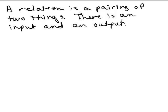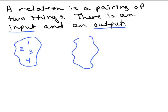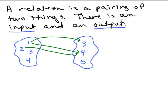A relation is a pairing of two things. There is an input, and out comes an output. One way you might do it — let's say I've got this picture and I've got some numbers: 1, 2, 3, and 4. And then I have this output, and over here I have a 3, 4, and a 5. Each input might have more than one output, or just one output.